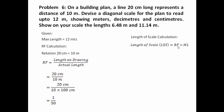For the length of scale, we use the formula: RF multiplied by maximum length. RF is 1 over 50 and the maximum length is 12 meters. Converting meters to centimeters: 1 over 50 multiplied by 1200 centimeters gives us 24 centimeters. So the length of scale has worked out as 24 centimeters. Let's get started with the construction.